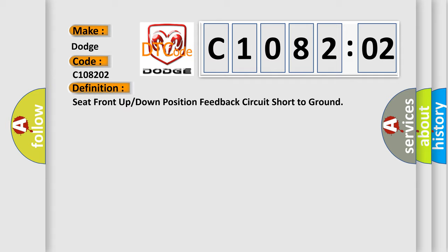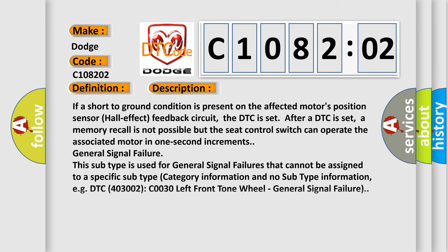And now this is a short description of this DTC code. If a short to ground condition is present on the affected motor's position sensor hall effect feedback circuit, the DTC is set. After a DTC is set, memory recall is not possible, but the seat control switch can operate the associated motor in one second increments. General signal failure. This subtype is used for general signal failures that cannot be assigned to a specific subtype category.